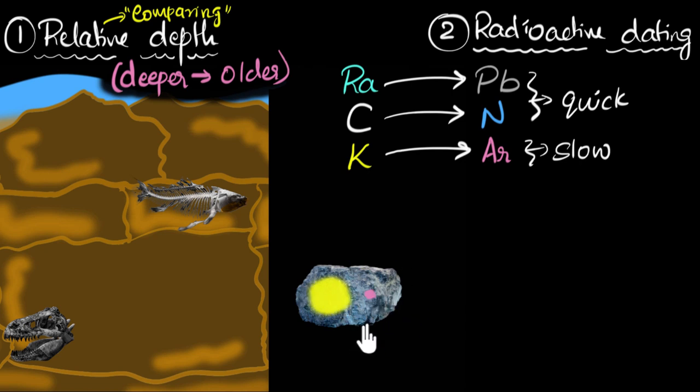And so from this, we could estimate, if you know the mathematics, we can say, huh, this rock is 50 million years old. That's basically how it works. You just look at how much amount of potassium is there, how much amount of argon is there, and you can estimate it.